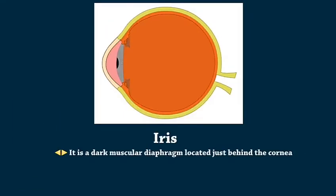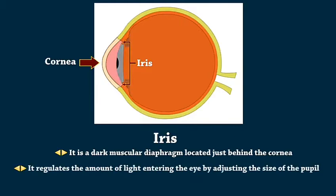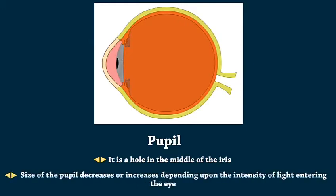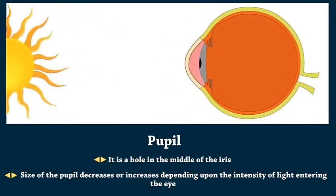Iris is a dark muscular diaphragm located just behind the cornea. It regulates the amount of light entering the eye by adjusting the size of the pupil. Pupil is a hole in the middle of the iris. Size of the pupil decreases or increases depending upon the intensity of light entering the eye.